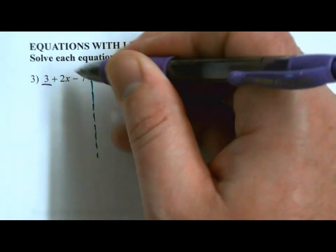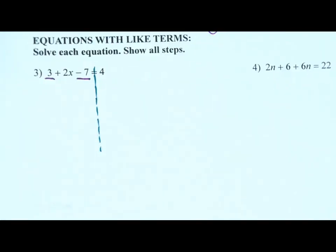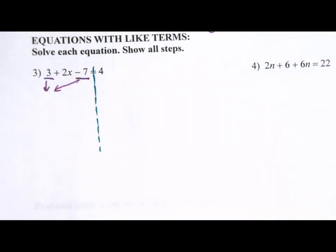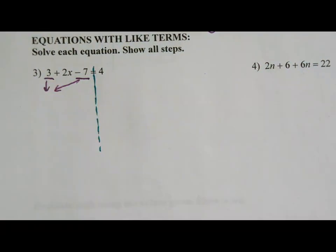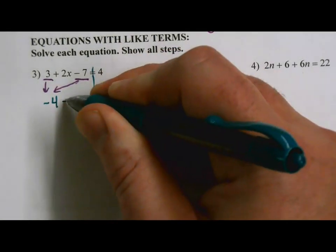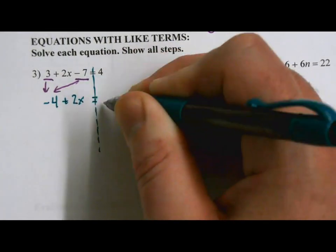However, 3 and negative 7 are like terms. Neither of them have x's in them. So we are going to combine those two things together into a single term. So I'm thinking to myself, what is 3 minus 7? That is negative 4. So 3 and negative 7 combined become negative 4. Let's bring down the rest of our equation. The 2x didn't go anyplace. We could not combine it with anything. And we've got a 4 over here.